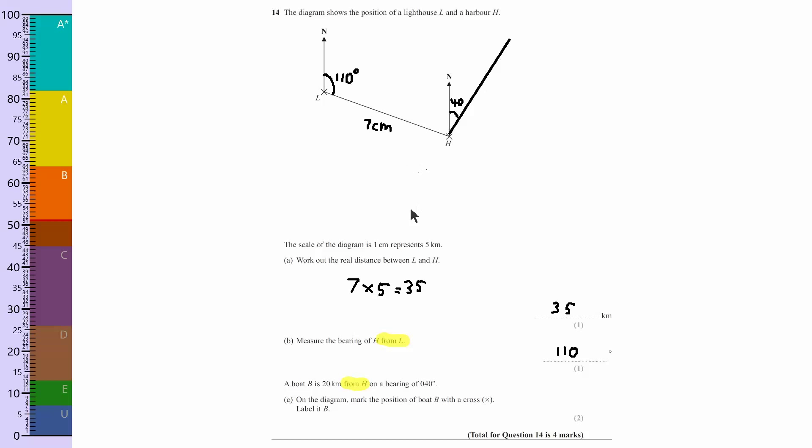Okay, and it says the boat is 20 kilometers. Now 20 kilometers isn't going to help us with a scale diagram. We want to convert that into centimeters. So it's 20 and we want to divide that by 5 to work out in centimeters, which equals 4 centimeters.